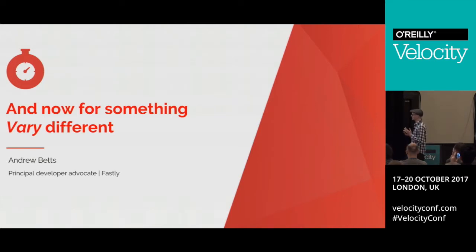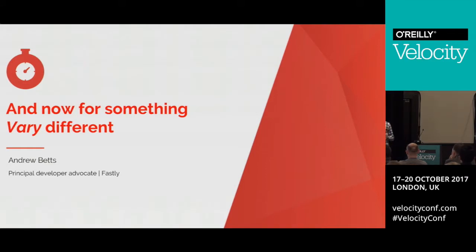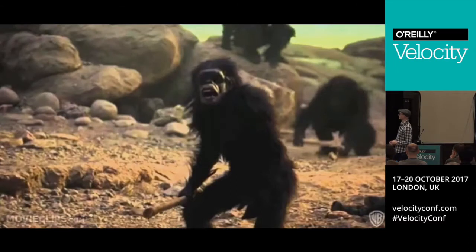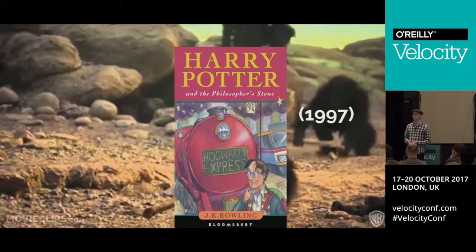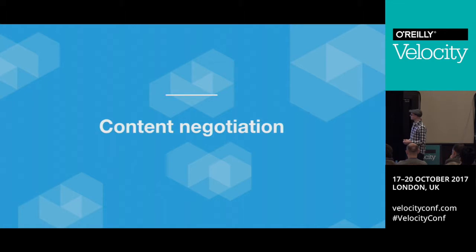To talk about the Vary header, I need to dive into a little bit of history. To give us some historical context — not this old, this old — in 1997, HTTP 1.1 was standardized, and with it we got something called content negotiation.